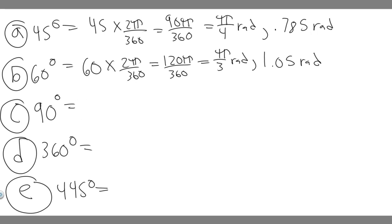So 90, 90 times multiplied by 2π over 360. This is going to be 180π over 360, which is just going to be π over 2. Divide both by 180. So π over 2 radians and then plug this in your calculator. 1.5707. I'm just going to round to 1.57, so 1.57 radians.